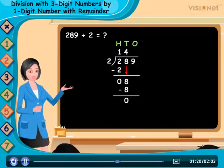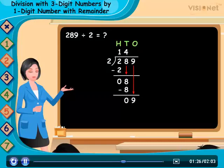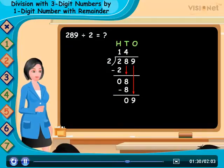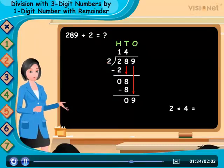There is one more digit, that is 9 left in dividend. Bring 9 down from the tens place and divide 9 by 2. As 2 into 4 is equal to 8.